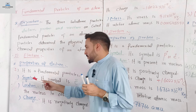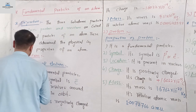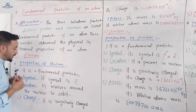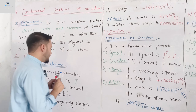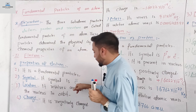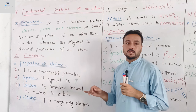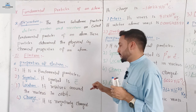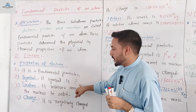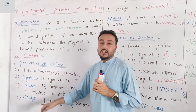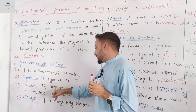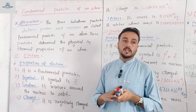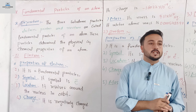The symbol represents the electron. The location of the electron is revolving around the nucleus in an orbital.